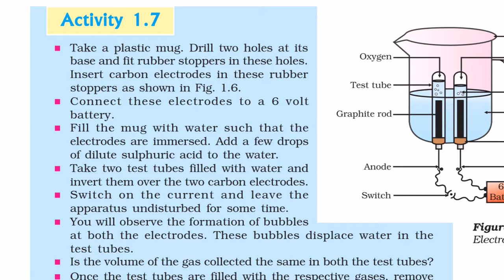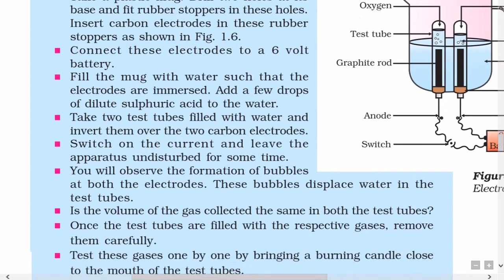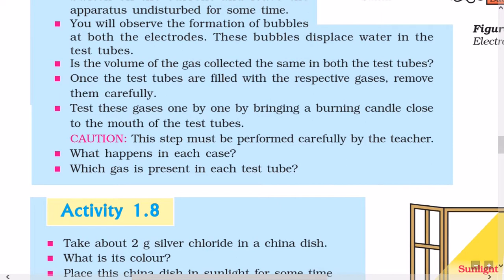Activity 1.7: Take a plastic mug, drill 2 holes at its base, and fit rubber stoppers in these holes. Insert carbon electrodes in these rubber stoppers as shown in figure 1.6. Connect these electrodes to a 6V battery. Fill the mug with water such that the electrodes are immersed, and add a few drops of dilute sulphuric acid to the water. Take two test tubes filled with water and invert them over the two carbon electrodes. Switch on the current and leave the apparatus undisturbed for some time. You will observe the formation of bubbles at both electrodes, which displace water in the test tubes. Once the test tubes are filled with respective gases, remove them carefully. Test these gases one by one by bringing a burning candle close to the mouth of the test tubes. This step must be performed carefully by the teacher.